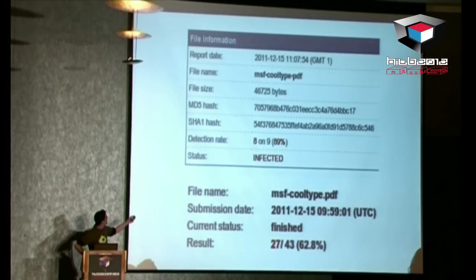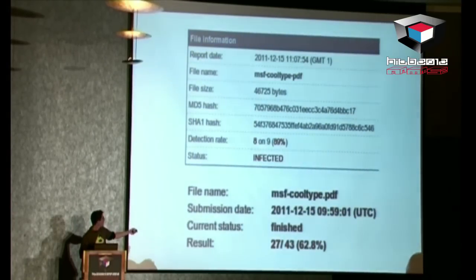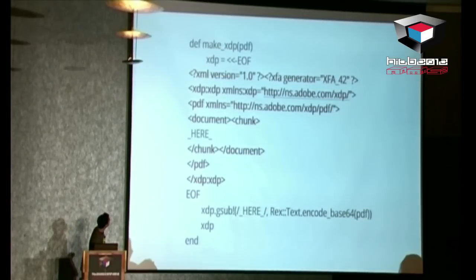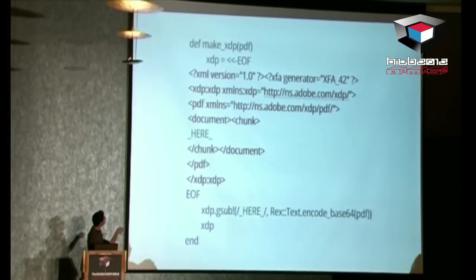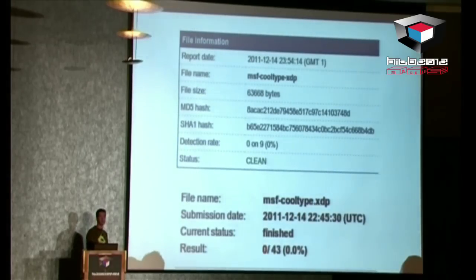Take the MSF cooltype.pdf file generated by Metasploit — it's a three-year-old vulnerability. It's detected eight out of nine times here, and 27 out of 43 antivirus solutions think it's infected. We'll try to avoid at least some antivirus. The patch for Metasploit is about 10 lines long and very simple: you take your PDF, do some Base64 encoding, put the result into an XDP file.